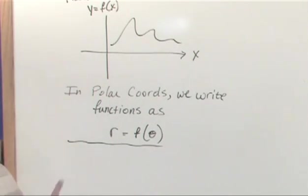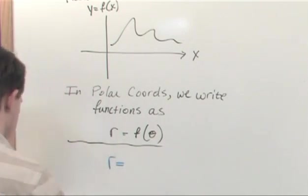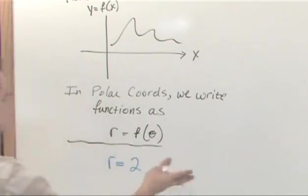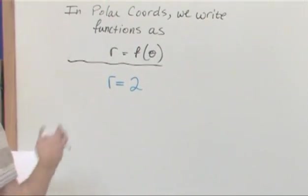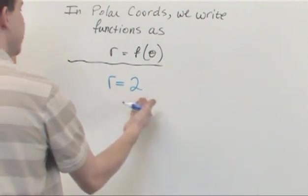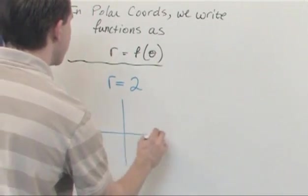The polar equation for a circle is, drum roll please, r equals, for instance, 2. This is an example - r equals 2. This is it, ladies and gentlemen. That is the equation of a circle. It's extremely simple. You see what's going on here? Let's go ahead and look at this and see if we understand what's going on.